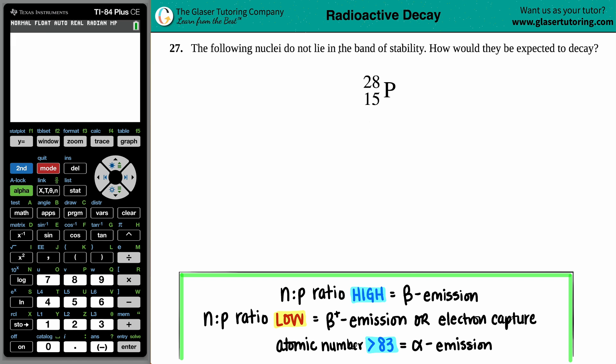Number 27: The following nuclei do not lie in the band of stability. How would they be expected to decay? We have good old phosphorus. In this example, we know that this type of phosphorus, this nuclide of phosphorus, does not lie in the band of stability, therefore it is classified as being an unstable nuclide.